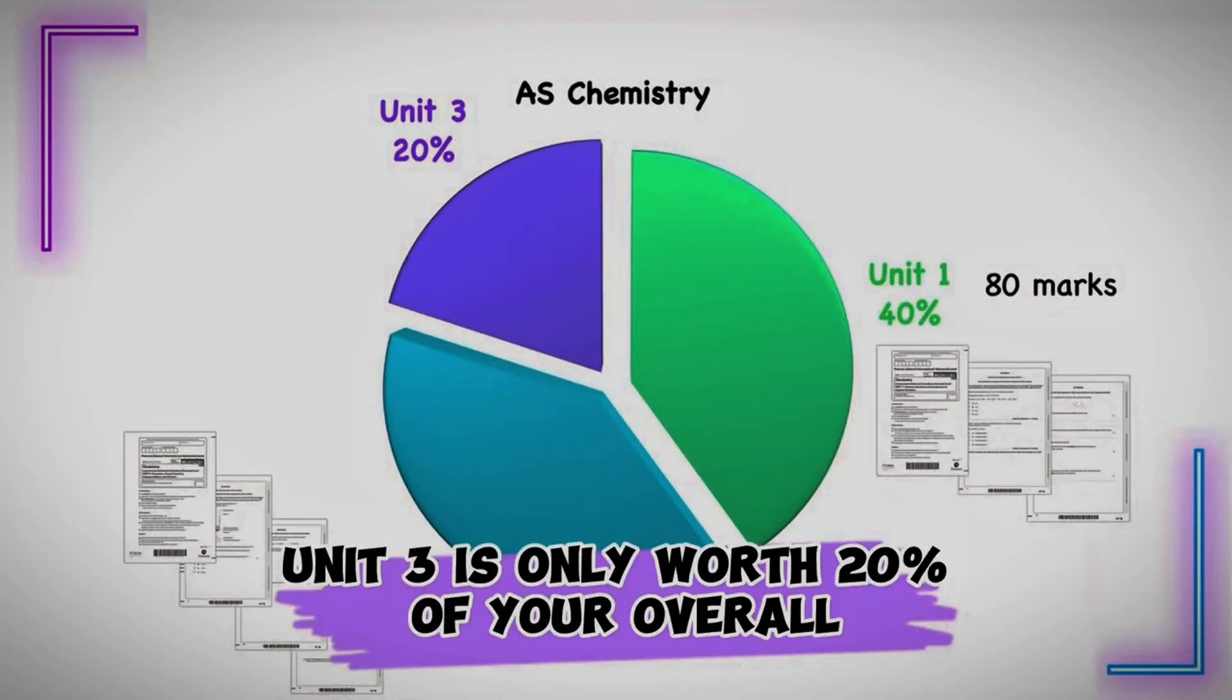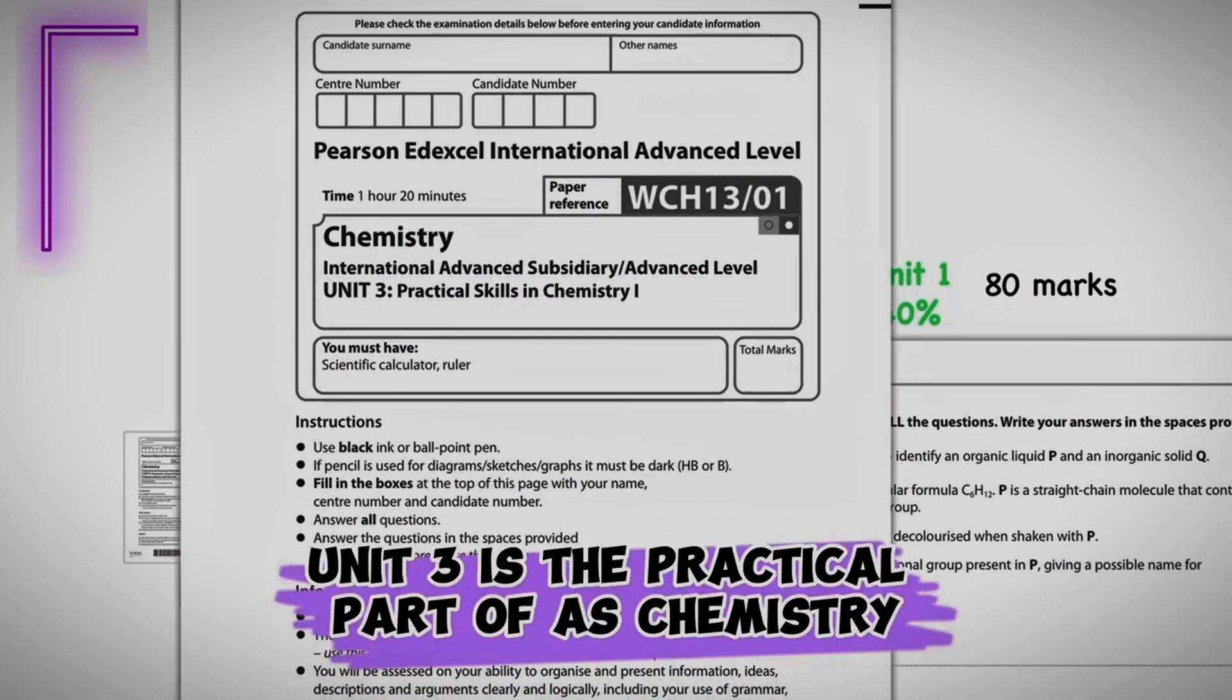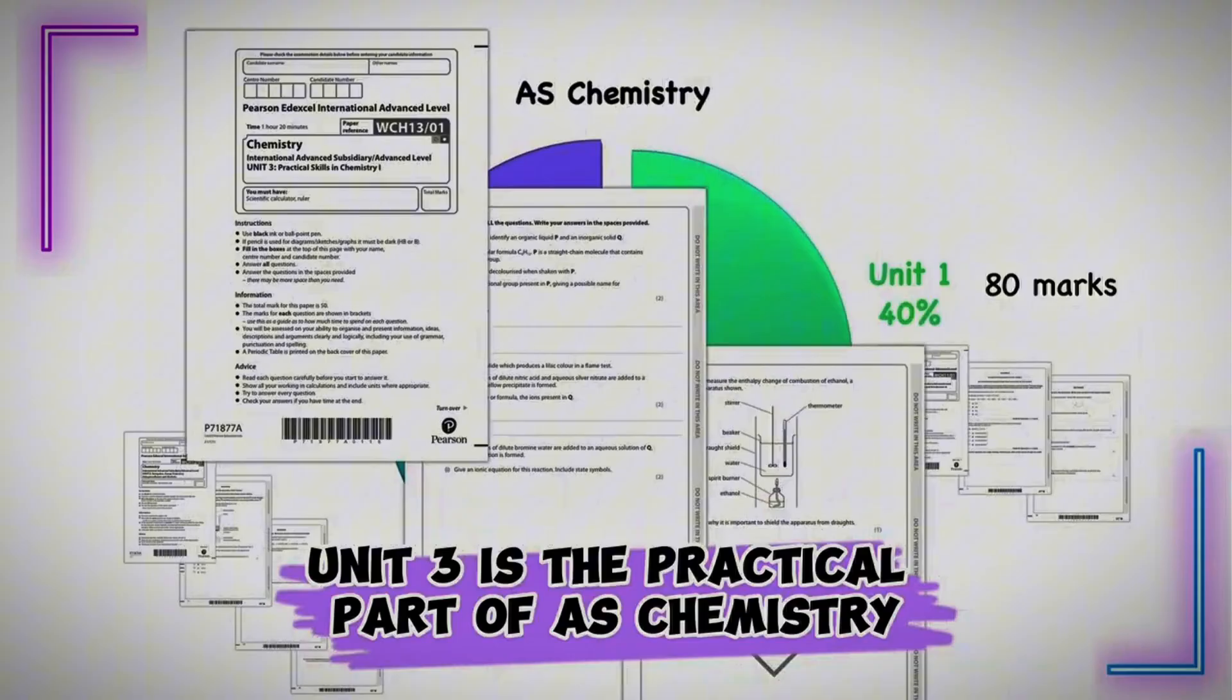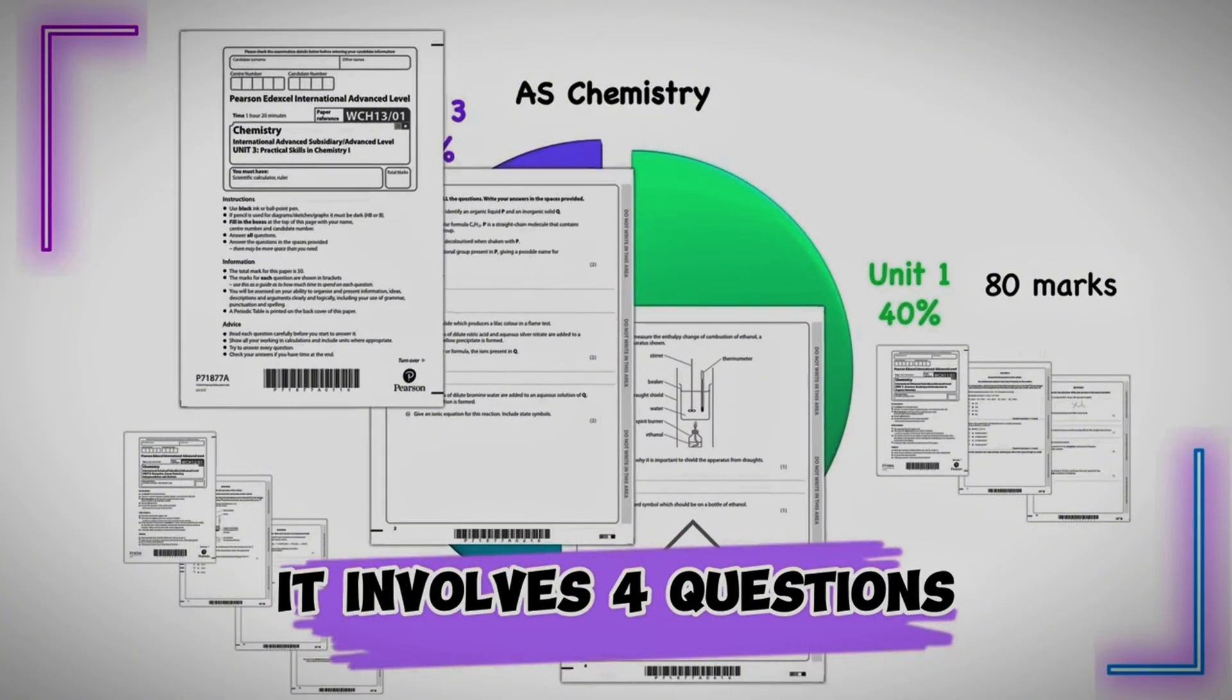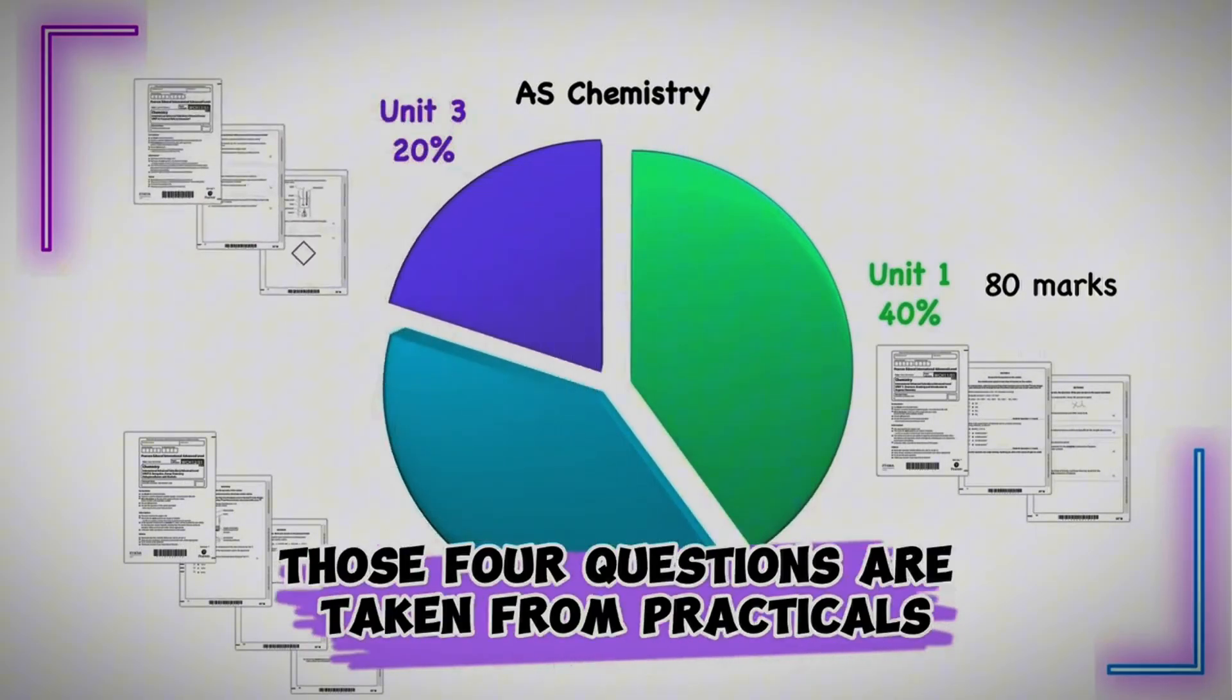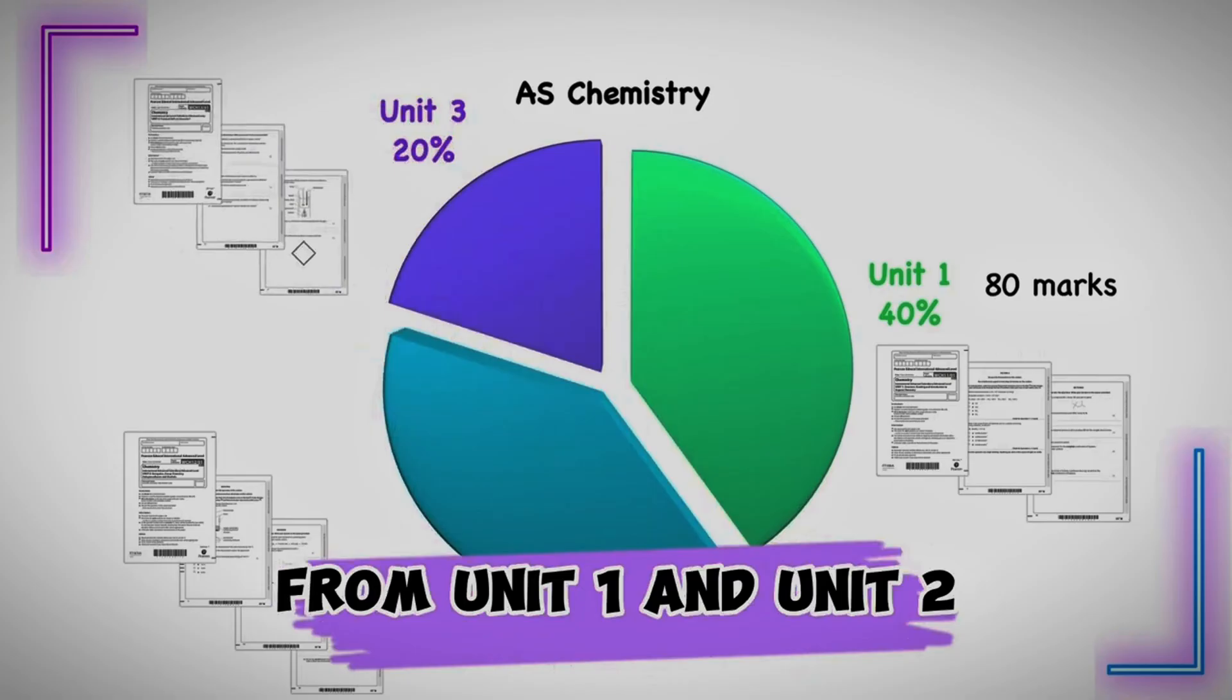Unit 3 is only worth 20% of your overall. Unit 3 is the practical part of AS chemistry. It involves four questions. Those four questions are taken from practicals from unit 1 and unit 2.